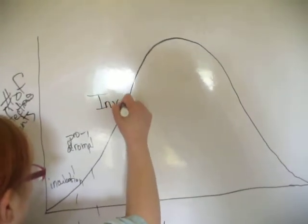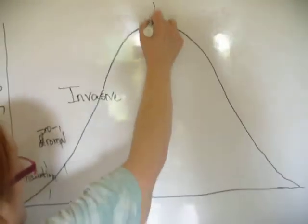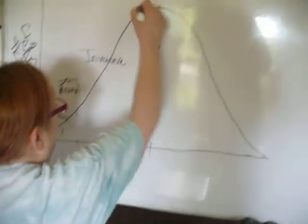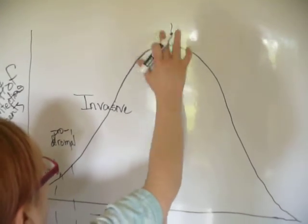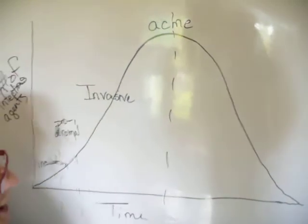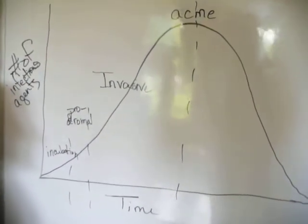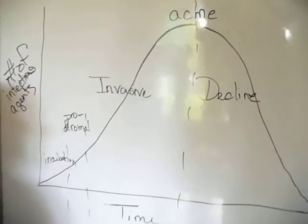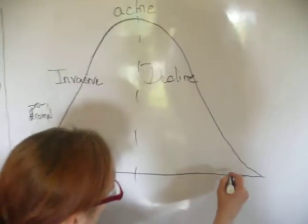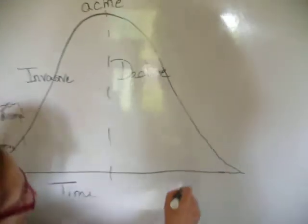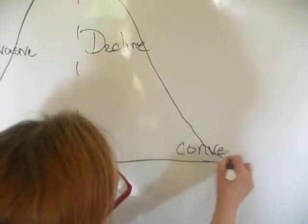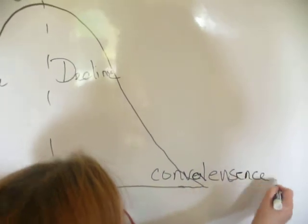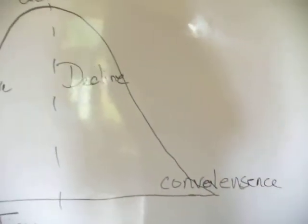Then you have the invasive stage, and this is when the signs and symptoms are getting really bad. The acme is the point at which the signs and symptoms are at their worst. Then there's the decline phase.